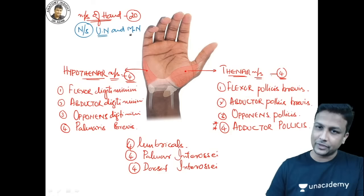Sensory supply of the hand — an important exam topic. On the palmar surface: medial one and a half digits are supplied by the ulnar nerve; lateral three and a half digits by the median nerve. A December 2019 exam question asked about a patient with loss of sensation on the medial one and a half digits — the answer is ulnar nerve. On the dorsal surface: medial one and a half digits → ulnar nerve.